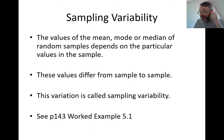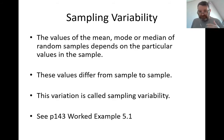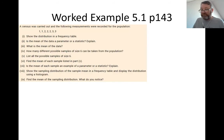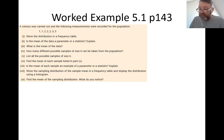We're going to take a look at Exercise 5.1 — the worked example in your book on page 143. It's a very good example to show how samples actually reveal something about the population. It's a nice guided exercise. A census was carried out and the measurements were recorded for the population: 1, 1, 2, 2, 2, 3, 3.